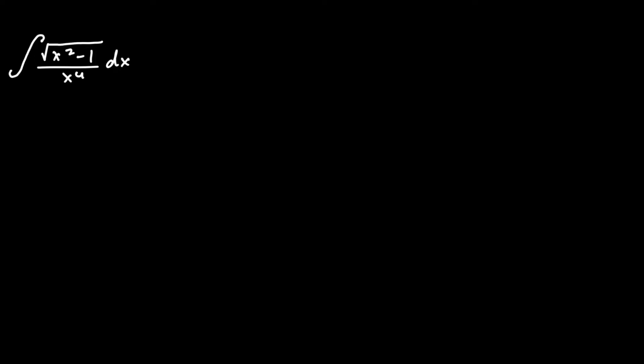What is the integral of square root of x squared minus 1 over x to the 4th dx? We can tell from the square root that this is likely to be a trig integral, and we're going to have to make a substitution.